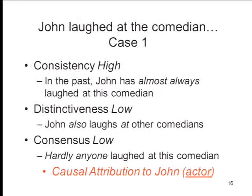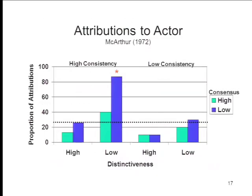Case one: John laughed at the comedian. Consistency is high — John has almost always laughed at this comedian. Distinctiveness is low — John also laughs at other comedians. Consensus is low — hardly anyone else laughed at this comedian. The attribution is to the actor, to something about John, because he's the only one doing this. MacArthur found that exactly this combination — high consistency, low distinctiveness, and low consensus — drove attributions to the actor, just as the model predicts.